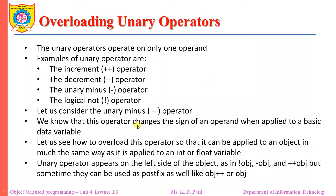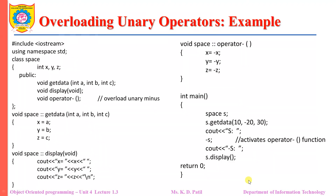We know that the unary minus operator changes the sign of an operand when applied to a basic data variable. Let us see how to overload this operator so that it can be applied to an object — a variable of a class type — in much the same way as it is applied to an integer or float variable. Unary operators appear on the left side of an object normally, such as not obj, minus obj, and increment obj, but sometimes they can be used as a postfix such as obj++ or obj-- for increment and decrement operators.